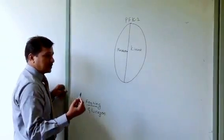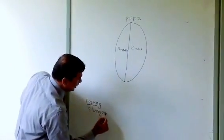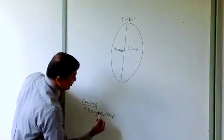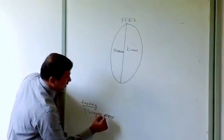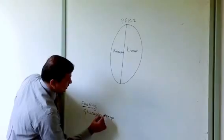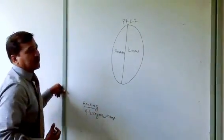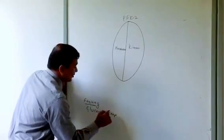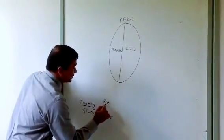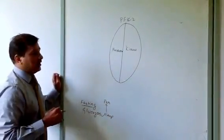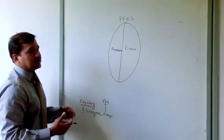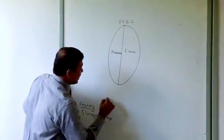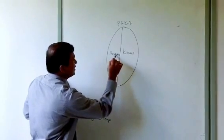Glucagon is a water-soluble hormone, so it will increase cyclic AMP formation. Through a G-protein coupled receptor reaction, G-protein binds to the receptor, adenylyl cyclase is activated, and that increases cyclic AMP. Cyclic AMP will activate protein kinase A, so there will be an increase in protein kinase A. Protein kinase A, as the name says, is a kinase — so it will go and add phosphate.